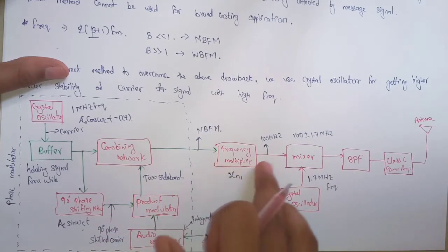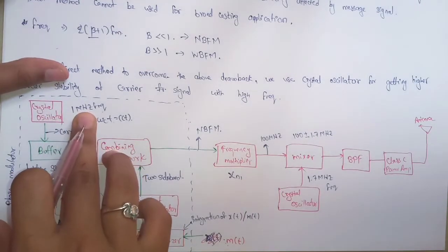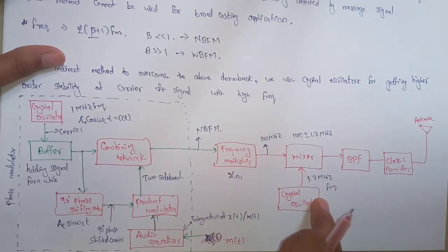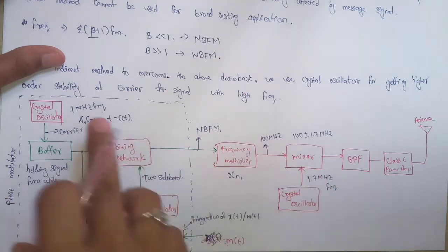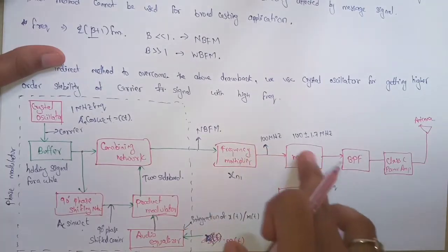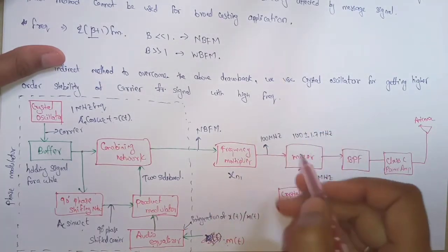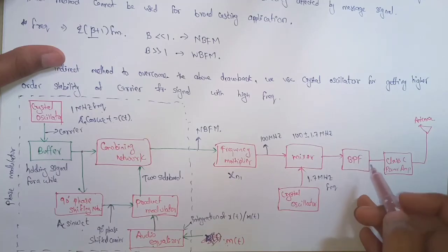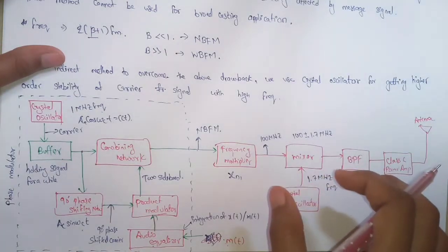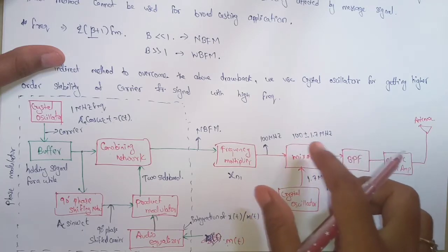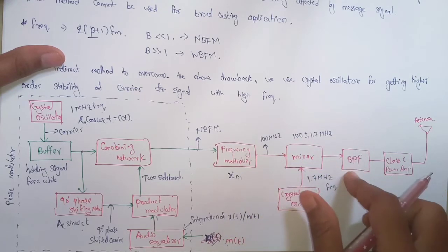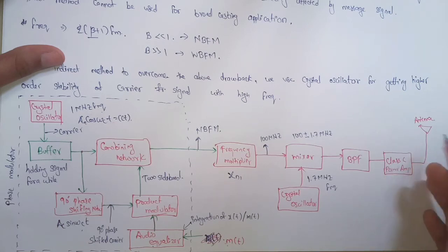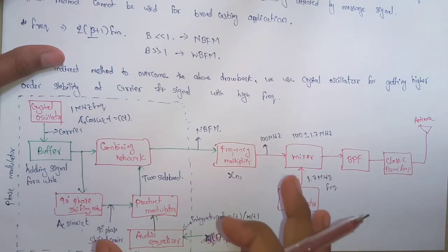The narrow band FM is converted into wide band FM using a frequency multiplier. The crystal oscillator generates 1 MHz, and after the frequency multiplier we get 100 MHz. Then a second crystal oscillator generates 1.7 MHz, which is greater than 1 MHz. Both 100 MHz and 1.7 MHz signals are sent to a mixer. The mixer gives two possible outputs: either 100 + 1.7 MHz or 100 - 1.7 MHz. A band pass filter selects whichever signal is required, and then it is sent to a Class C power amplifier which amplifies the power of the signal, and then to the antenna.